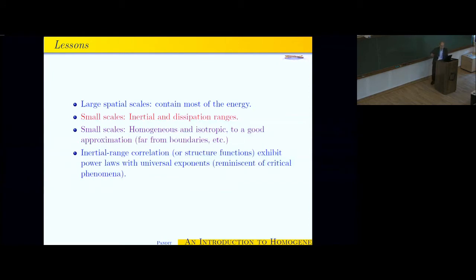So if you remember this picture I showed you about flow behind a grid, a few grid lengths down from there, from the grid, it's pretty homogeneous and isotropic. It also turns out that in the inertial range of scales, there are various quantities which I will define as we go along, energy spectra and structure functions, that exhibit power laws which, if you're not too demanding, have universal exponents, which are reminiscent of critical phenomena for those of you who have a statistical physics background.